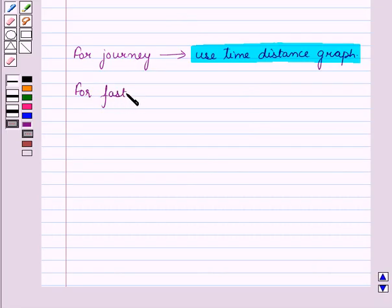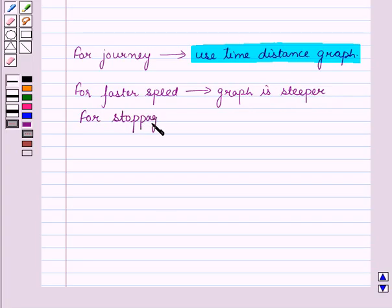And for faster speed, the graph is steeper. And for stoppage, we draw a horizontal line.